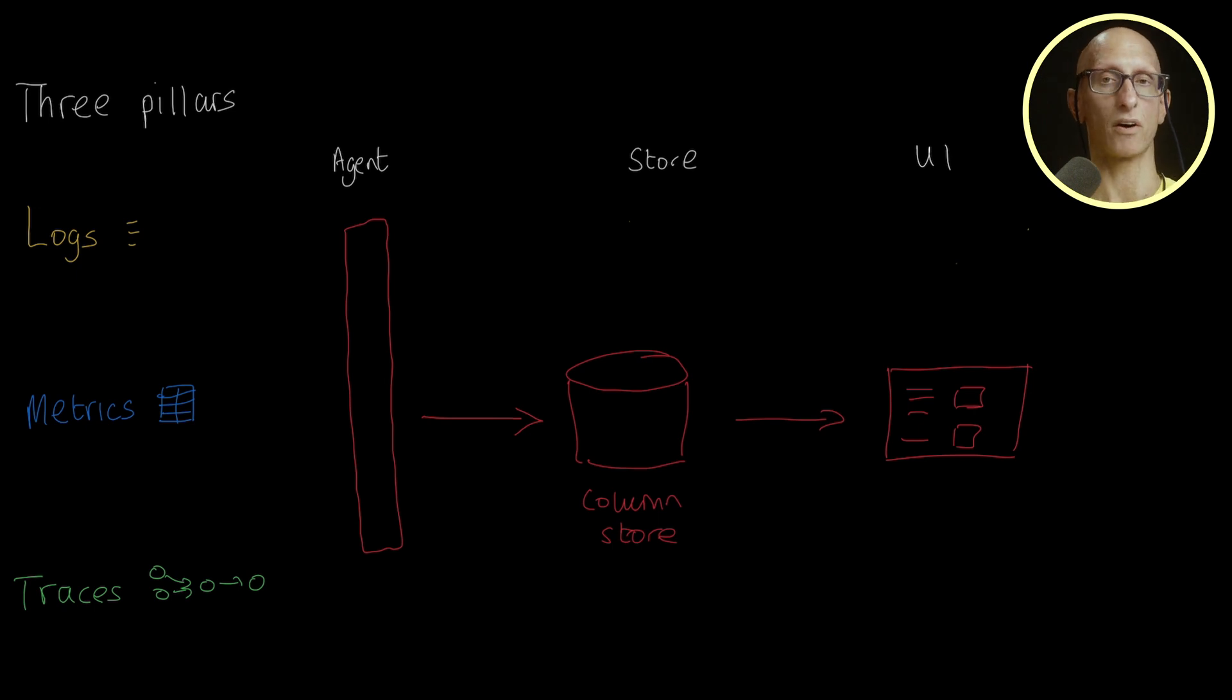We can then choose each component of the stack separately. For example, we could use Otel, Vector, or FluentD for collection. For storage, any column store would probably work. And for the UI, there are a variety of choices as well.